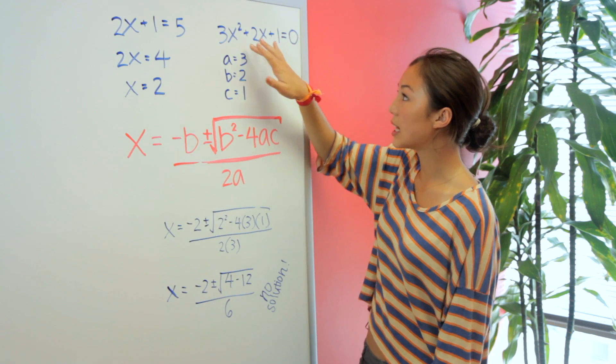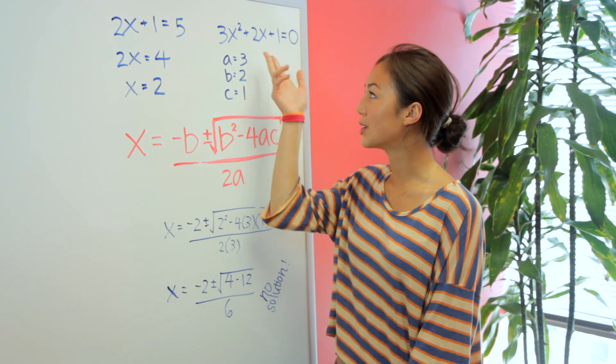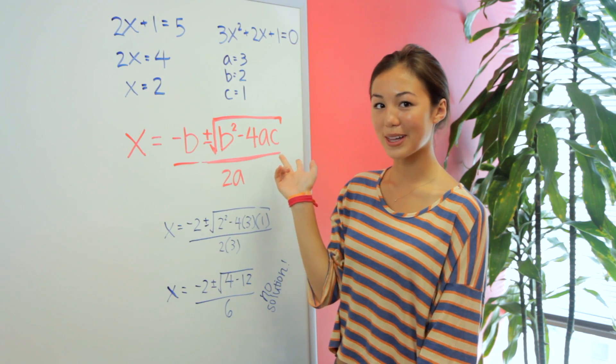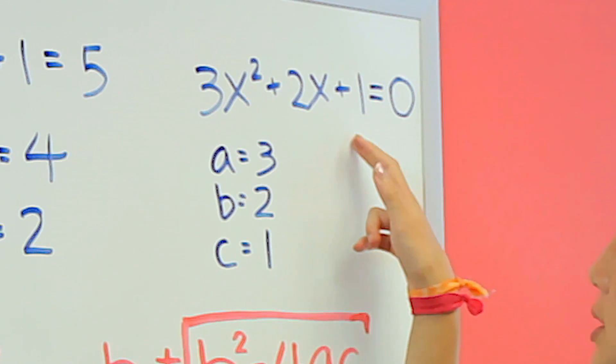In a case where x has an exponent, we're not going to be able to isolate x easily. This is a quadratic equation, so we're going to have to use the quadratic formula. In this case, we have 3x squared plus 2x plus 1 equals 0.